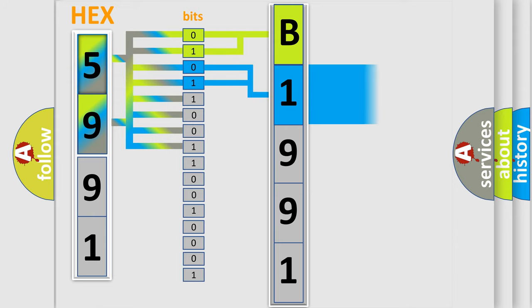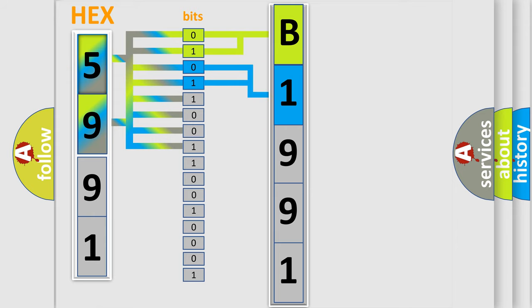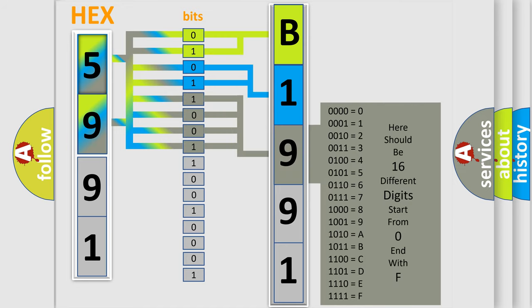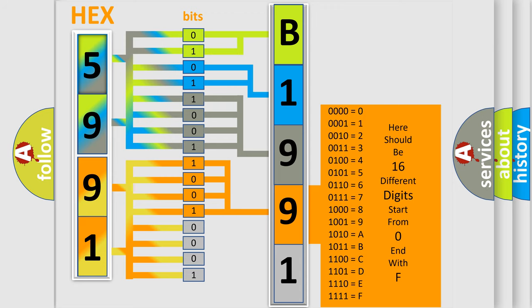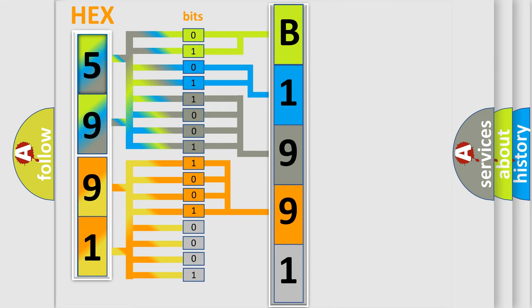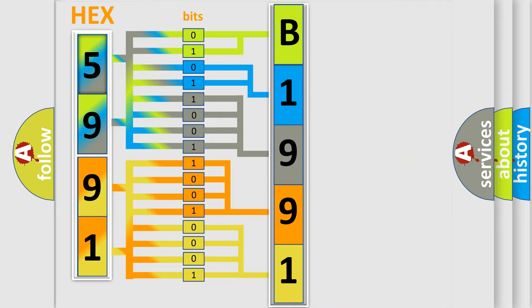The next two bits again determine the second character. The last bit styles of the first byte define the third character of the code. The second byte is composed of a combination of eight bits. The first four bits determine the fourth character of the code, and the combination of the last four bits defines the fifth character. A single byte conceals 256 possible combinations.